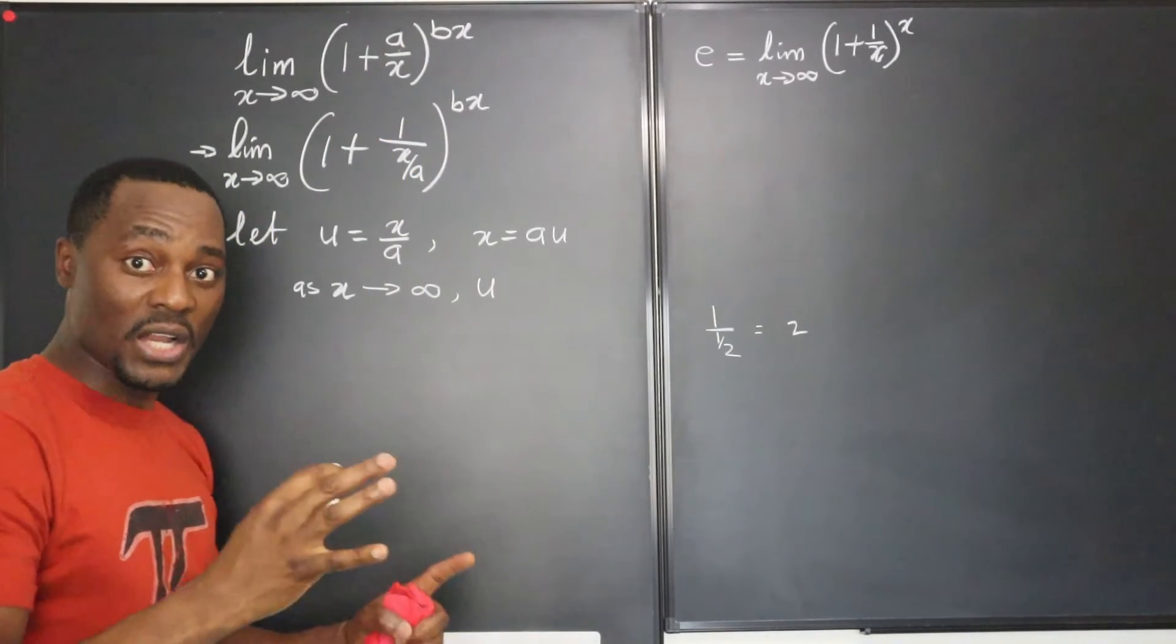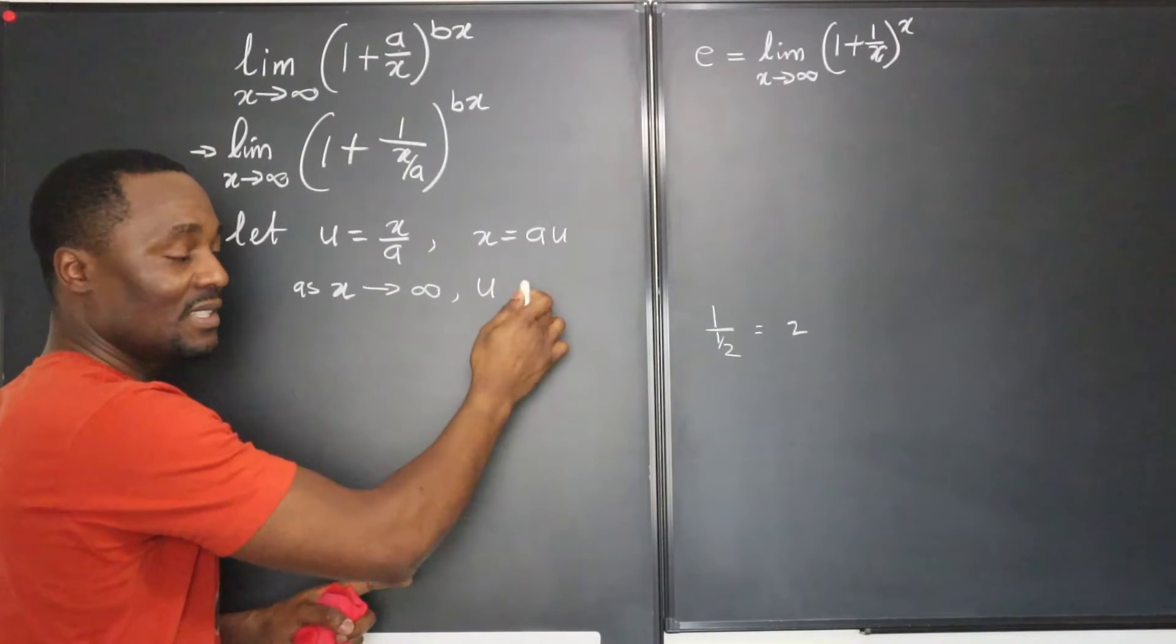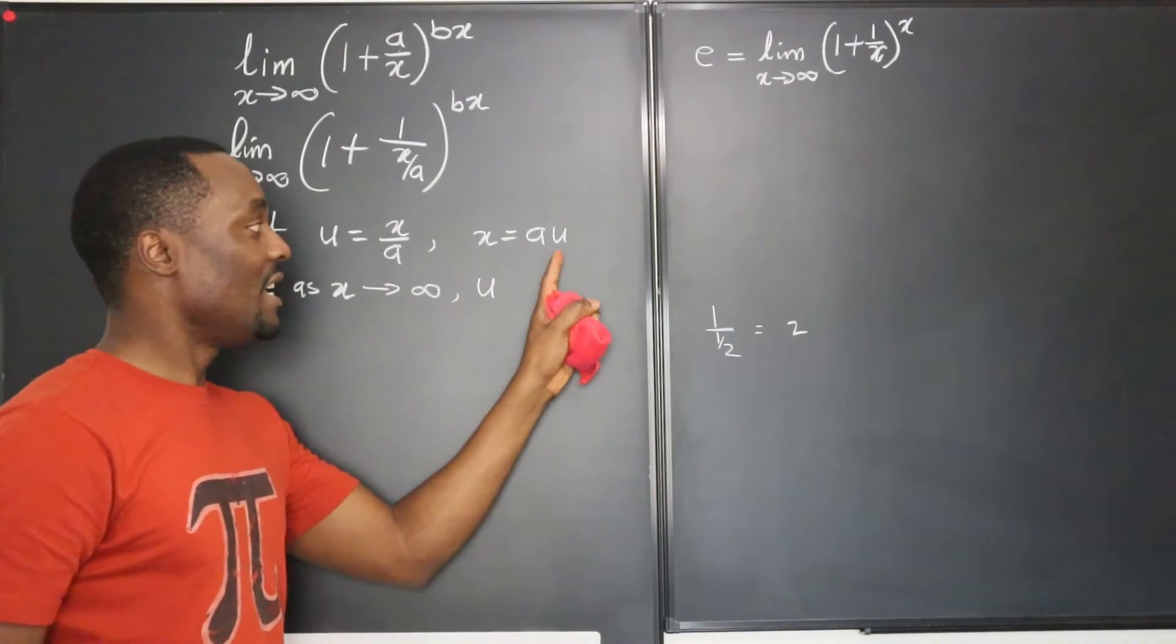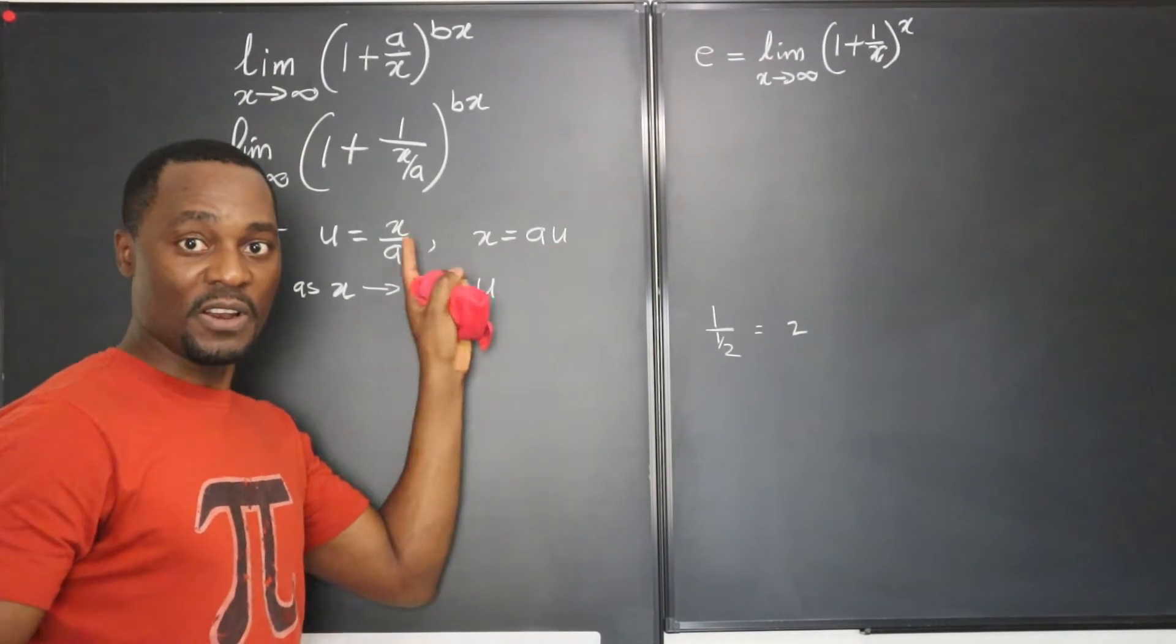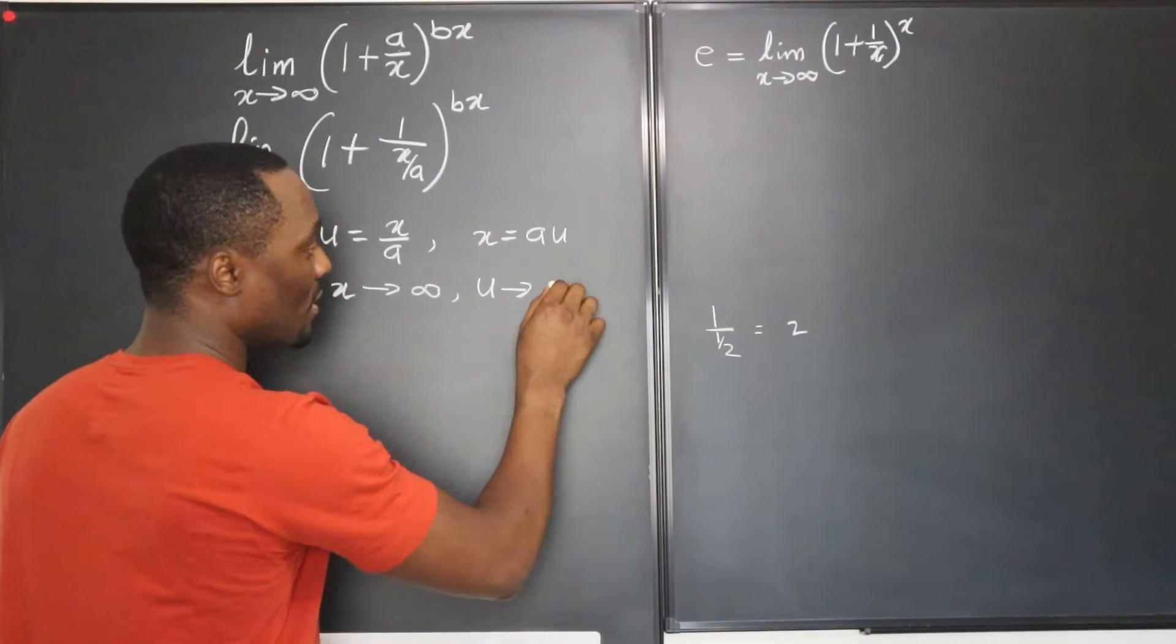So we can write that also that as x approaches infinity, we know that u also will approach infinity. Remember, a is a constant, so it doesn't change. The only way these two will be the same as x is increasing is if u also, which is a function of a, will also increase. So that gives us u also approaches infinity.